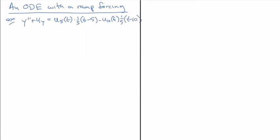That right-hand side is a Heaviside function, or what I call a ramp function. It goes like this: at 0 it's 0, and it remains 0 until 5, then it ramps up from 5 to 10, and then it stays constant from 10 on. So there is 5, and there is 10, and we'll call that g(t), the inhomogeneity, with a value of 1 up here.